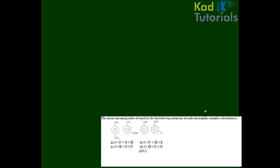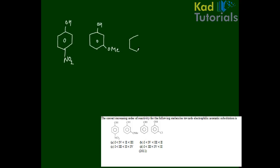The compounds we have been given: the first one has an OME group, the second has a methyl group, the third is phenol (OH), and the fourth compound is also given. So these are the four structures we need to compare.